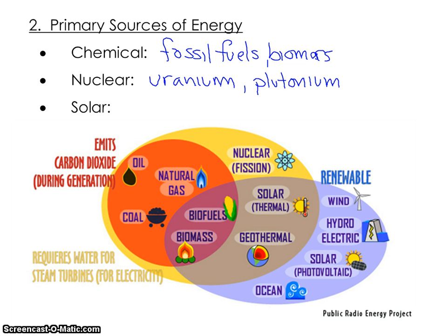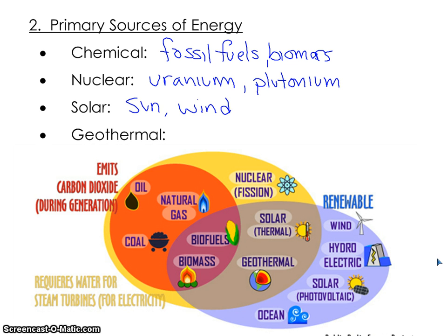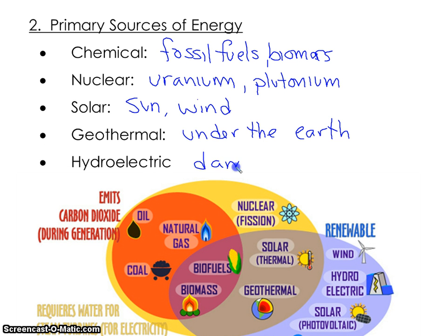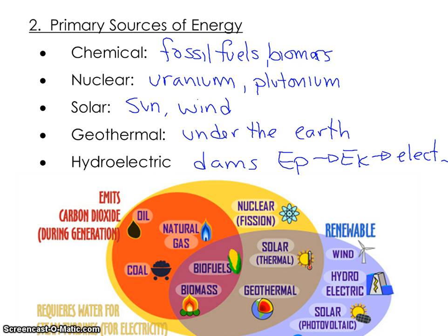Solar energy comes from the sun, and it also gives us wind energy because convection currents created by the uneven heating on the surface of the earth allow wind to form, which we can use to make electricity. Geothermal is another form — not used much, but it has potential to produce quite a bit, coming from heat under the earth for electricity generation or heating homes with heat pumps. Finally, hydroelectric energy comes from dams where we take the potential energy due to gravity from water; as it flows down, it converts to kinetic energy, which eventually produces electricity.